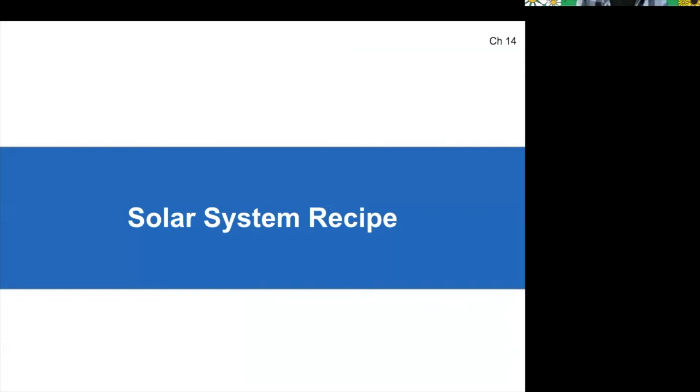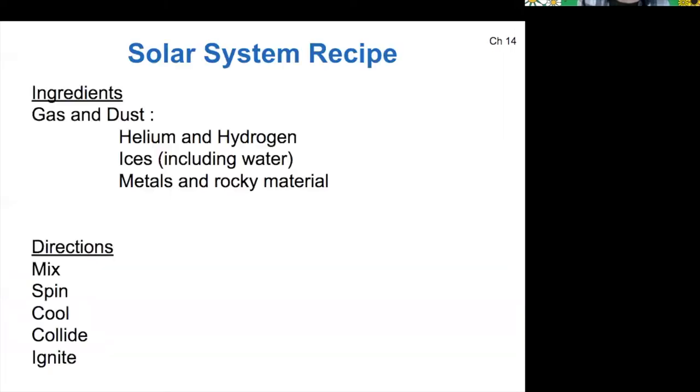All right, so we can talk about making the solar system as if it's a recipe. I just finished watching the Great British Bake Off last night, so I've got recipes in mind. Essentially what we do is start with some set of ingredients, mostly gas of hydrogen and helium, and then dust, ices, metals, and rocky material. And then we're going to mix those together, spin them out into a flat disk, cool the disk, collide the bits that freeze out, and then ignite the star. So I'm going to walk through each of these steps here.